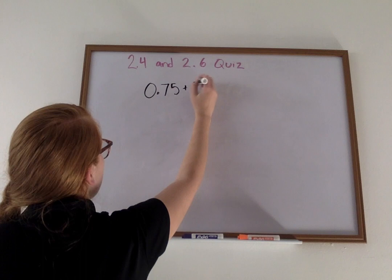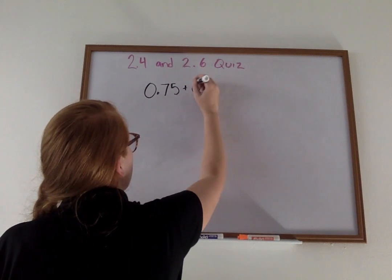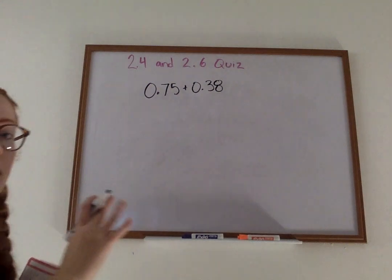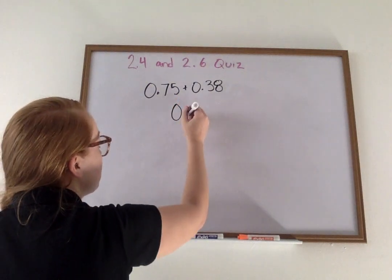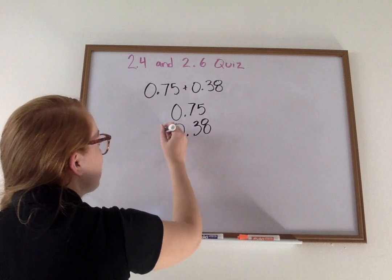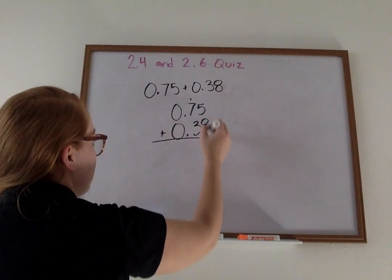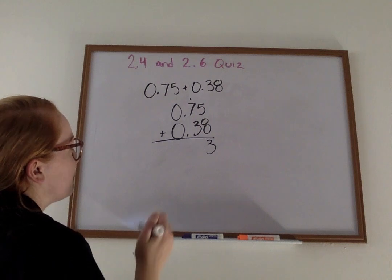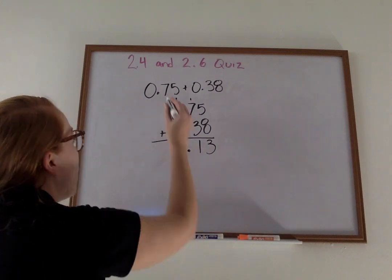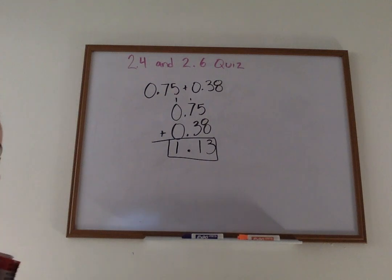0.75 plus 0.38. So first what you're going to do is you need to stack them on top of each other and line up the decimal. And we're adding here. So first our 5 plus our 8 is 13. 1 plus 7 is 8. 8 plus 3 is 11. We bring down our decimal. 1 plus 0 plus 0 is 1. Our answer is 1 and 13 hundredths.